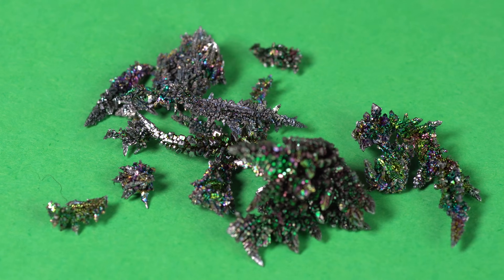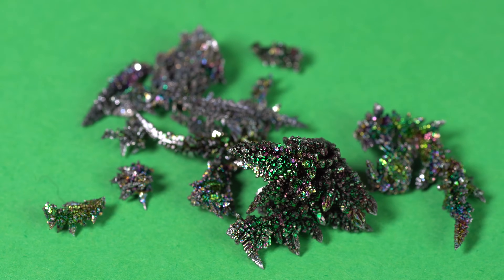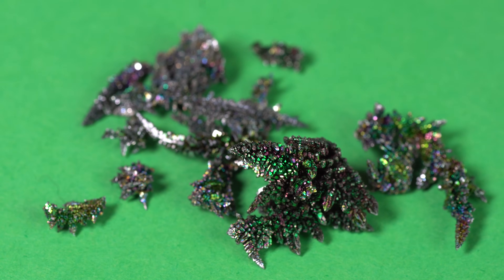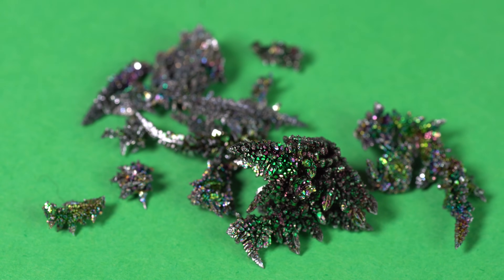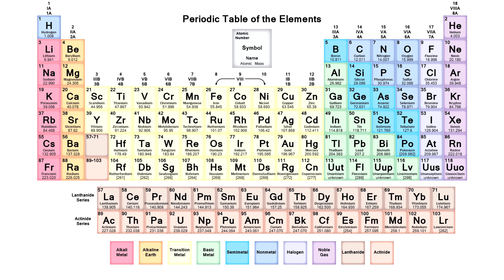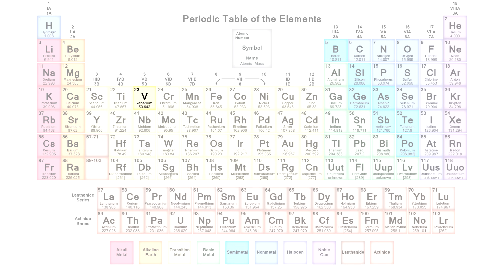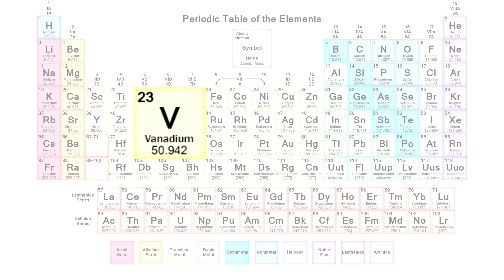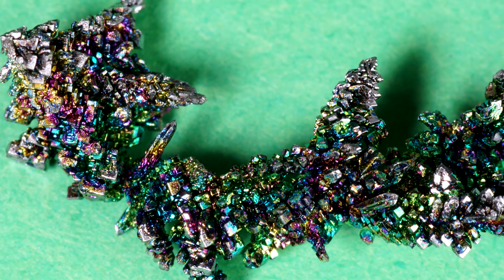Hello everyone! Today I'll tell you about such a metal as vanadium. Vanadium is a transition metal that is located in the fifth group of the periodic table of chemical elements.